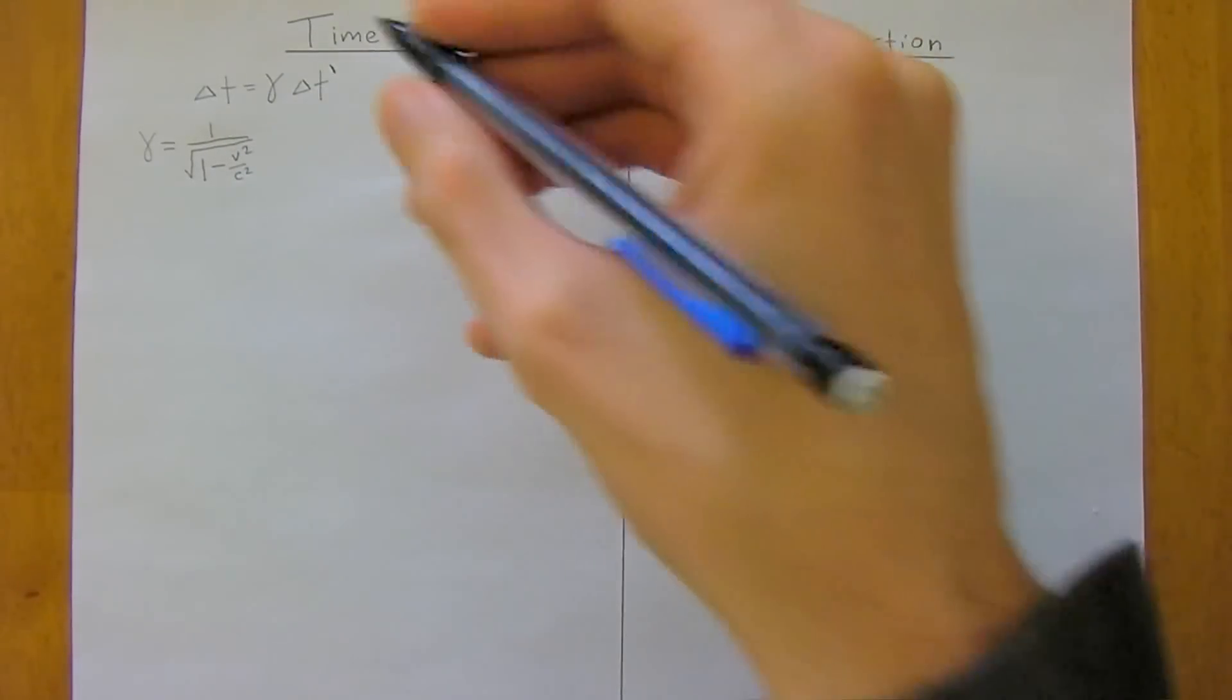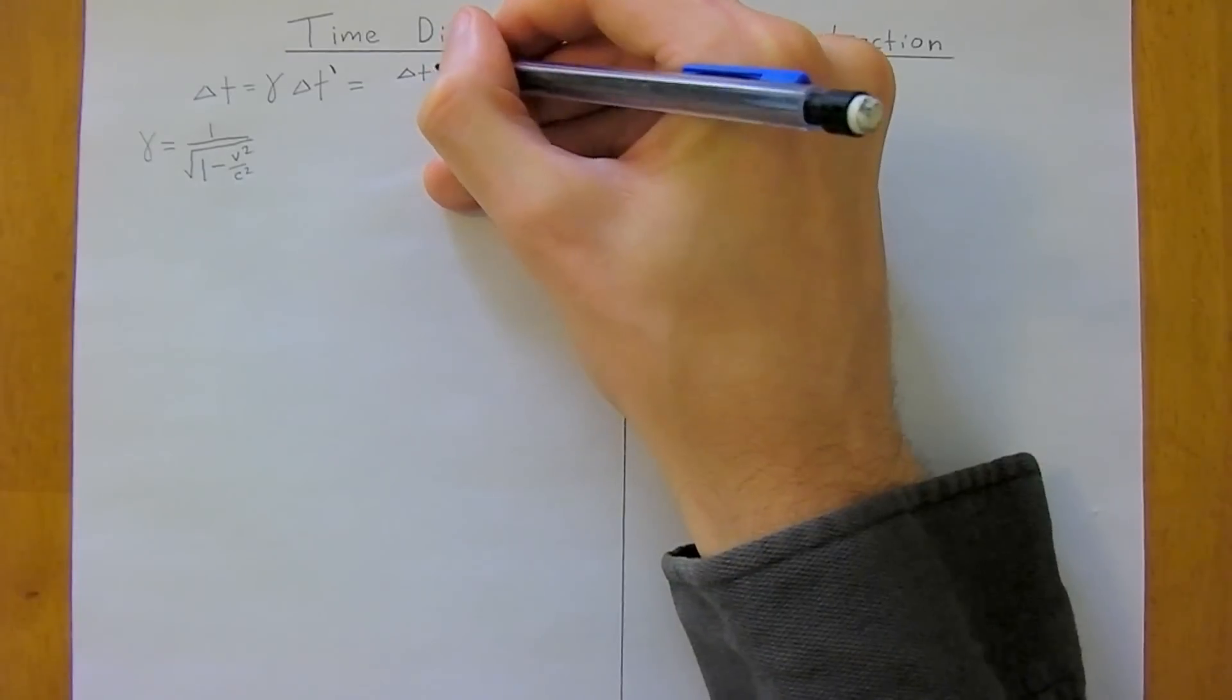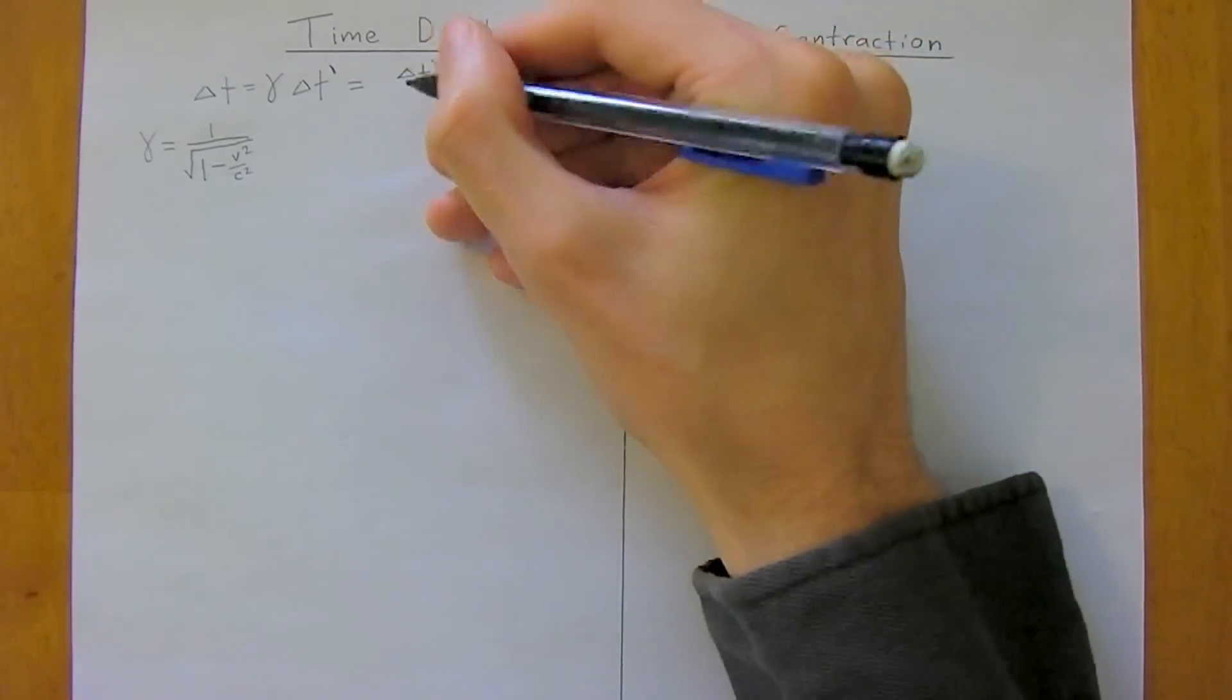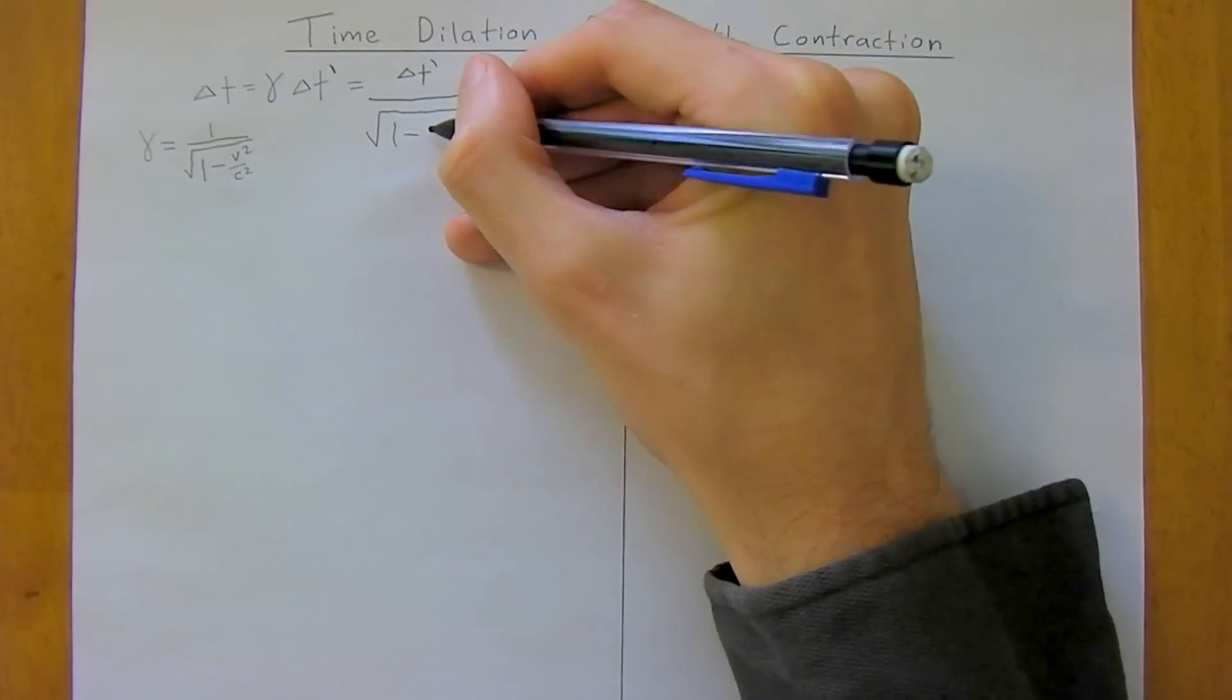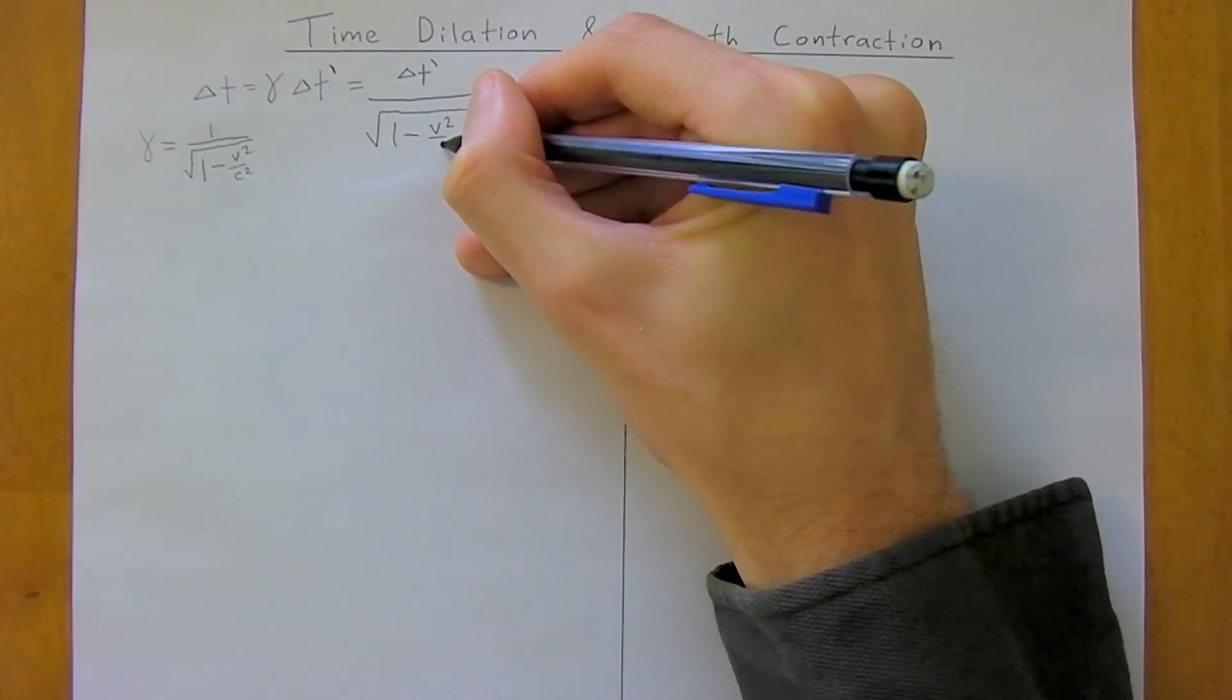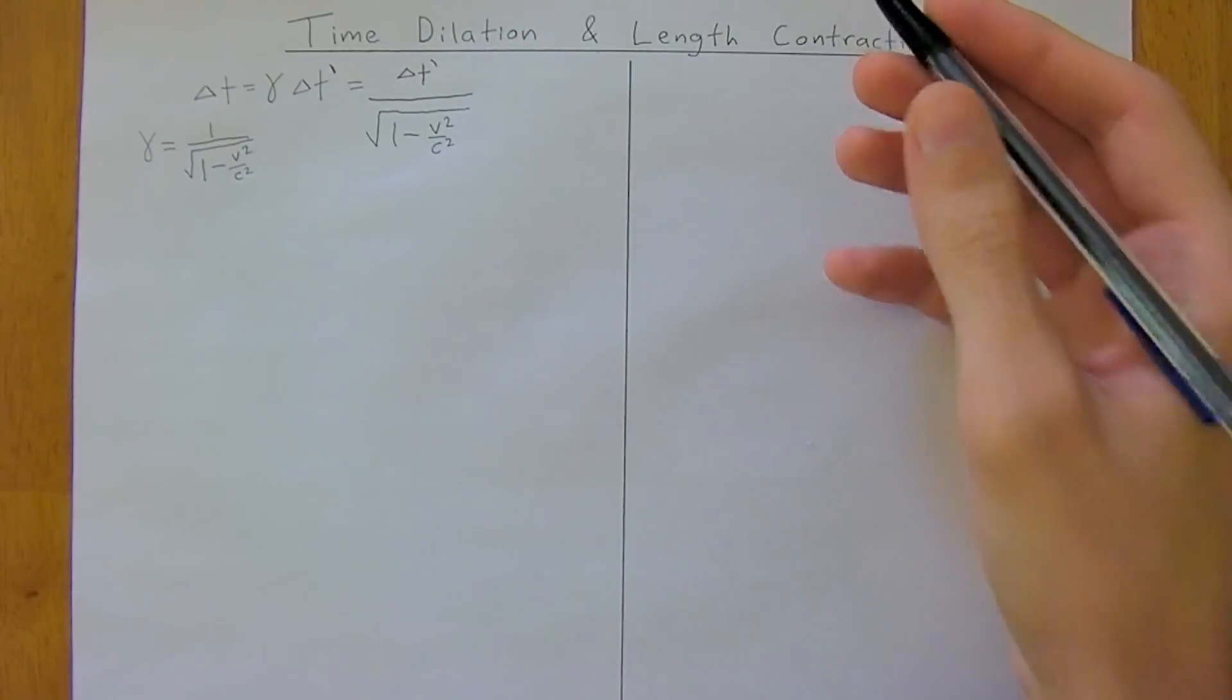And so we can rewrite this equation as delta t naught divided by the square root of 1 minus v squared over speed of light squared. And just to get you used to notation,